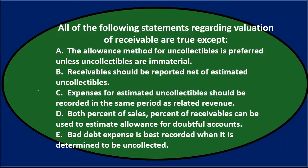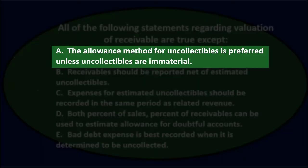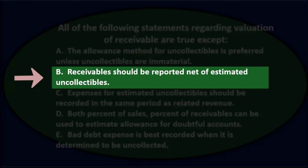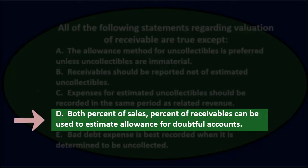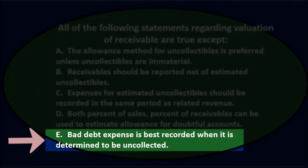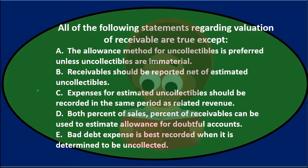Next question. All the following statements regarding valuation of receivables are true except: A, the allowance method for uncollectibles is preferred unless uncollectibles are immaterial. B, receivables should be reported net of estimated uncollectibles. C, expenses for estimated uncollectibles should be recorded in the same period as related revenue. D, both percentage of sales and percentage of receivables can be used to estimate allowance for doubtful accounts. E, bad debt expense is best recorded when it is determined to be uncollectible.